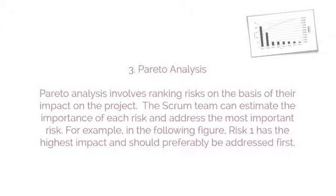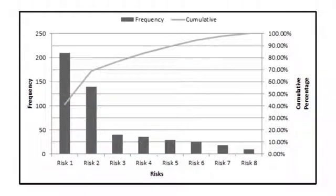Pareto analysis involves ranking risks on the basis of their impact on the project. The Scrum team can estimate the importance of each risk and address the most important risk first. For example, in the following figure, risk one has the highest impact and should preferably be addressed first.